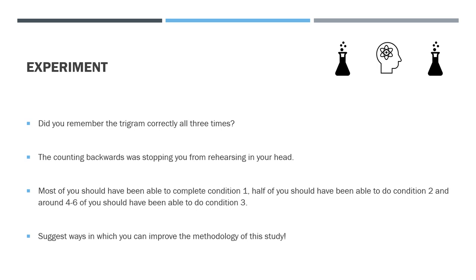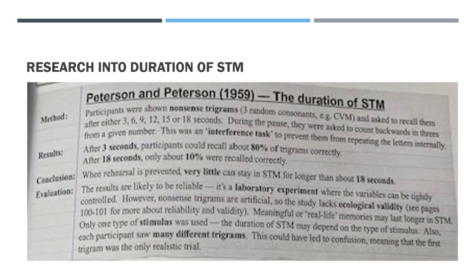What we need to do is put this into practice: for duration of short-term memory that is pretty much the exact same procedure as Peterson and Peterson. They had nonsense trigrams like us; participants were asked to recall them but across more intervals. They did six conditions: three, six, nine, twelve, fifteen, or eighteen seconds. Participants were asked to count backwards in threes from any given number - that was their interference task.